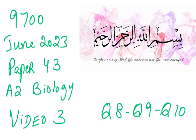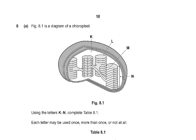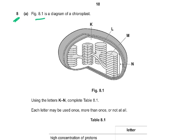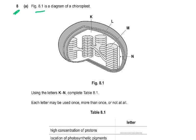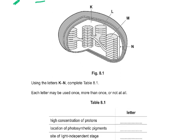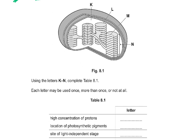Bismillahirrahmanirrahim. 9700 June 23 Paper 43. This is the third video which contains the last three questions, starting with question number eight. Figure 8.1 is a diagram of a chloroplast. Using the letters K to N, complete Table 8.1.